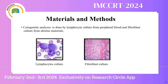Materials and methods: Cytogenetic analysis was done by lymphocyte culture from peripheral blood taken from couples who had never conceived or had a history of miscarriage. Fibroblast culture from abortus material was developed from tissue such as toe tissue, chorionic tissue, placental tissue, or any other tissue.